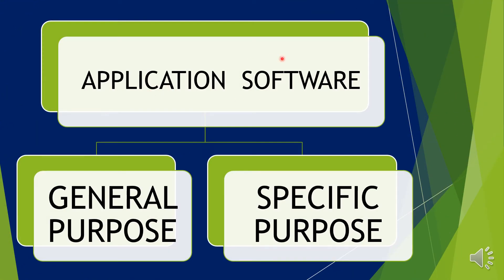Application Software is divided into two parts: General Purpose Software and Specific Purpose Software.